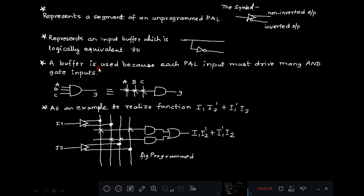A buffer is used because each PAL input must drive many AND gate inputs. If you consider a three input AND gate, ABC are the inputs and Y is the output.